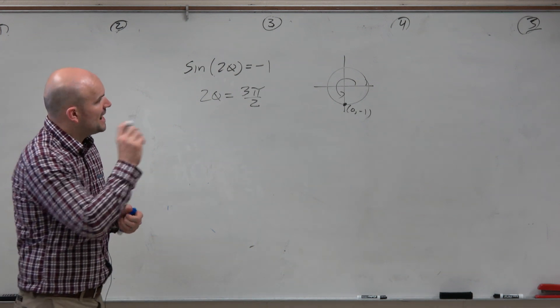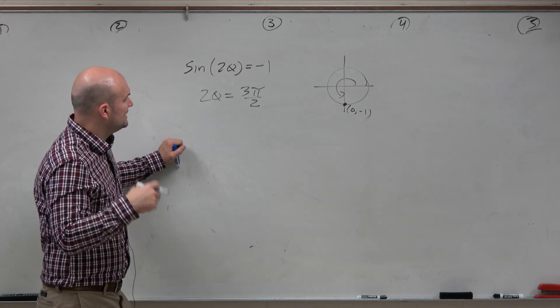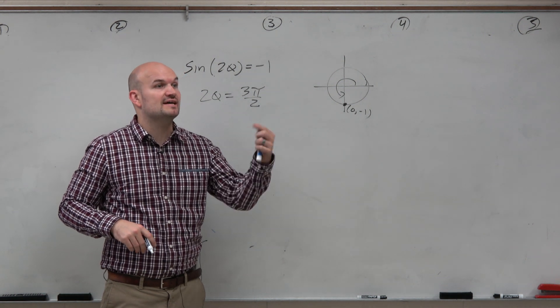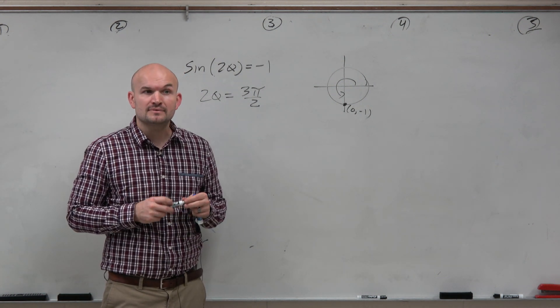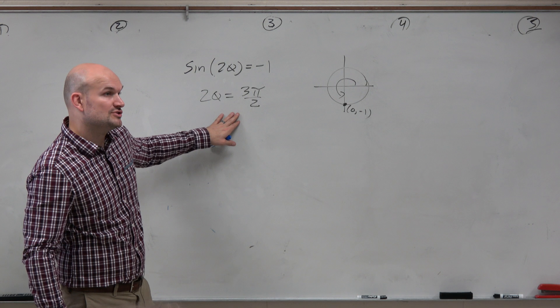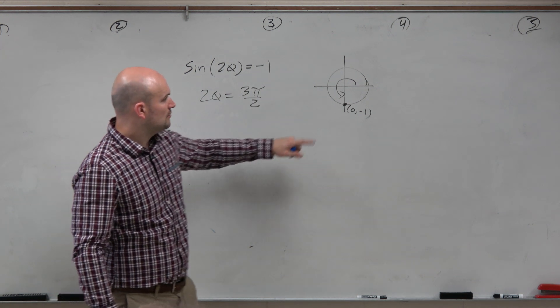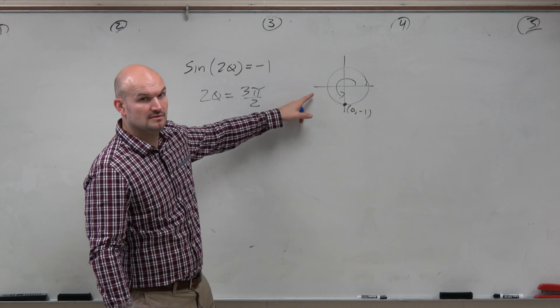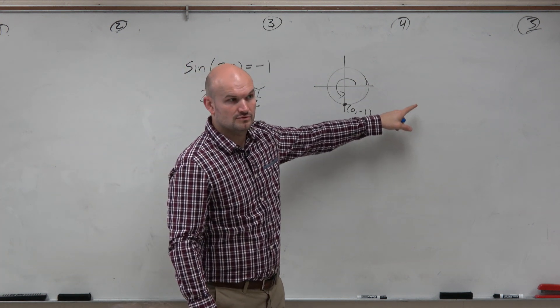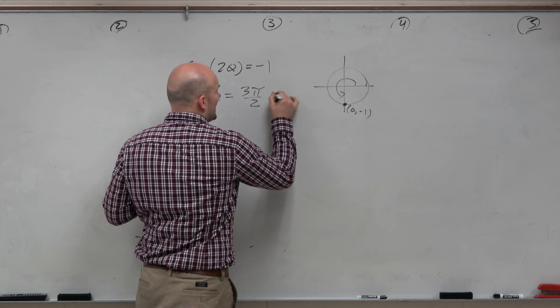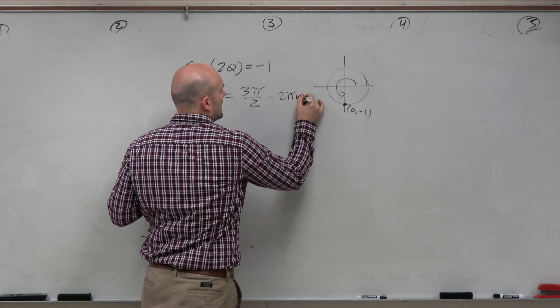Now actually, I'm sorry. The intervals, I think I asked you, is to find all the solutions and then find the solutions between 0 and 2 pi. So these are not all the solutions, are they? So all the solutions here would be 3 pi over 2 plus 2 pi n, right? There's no other solution. So you just got to keep on adding 2 pi n.